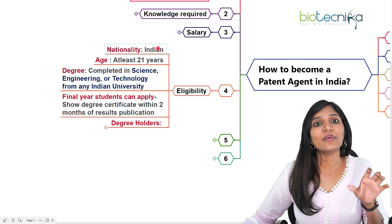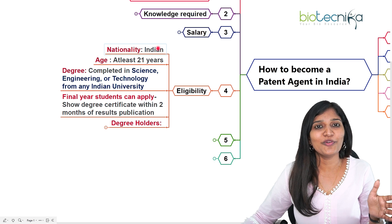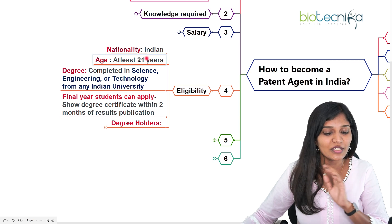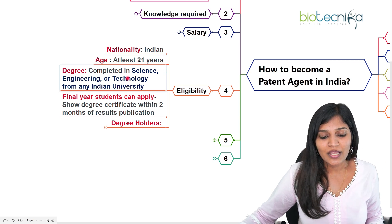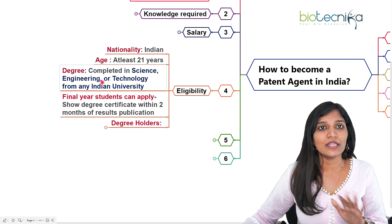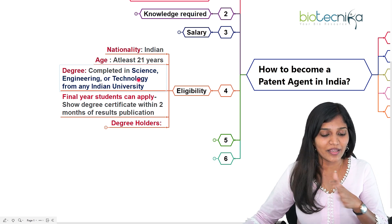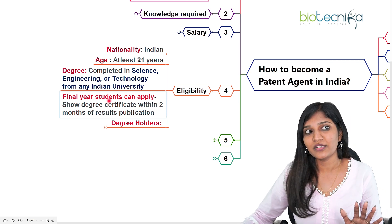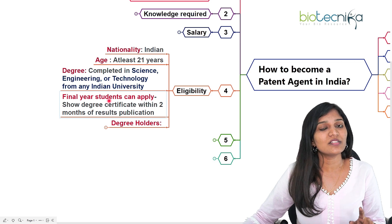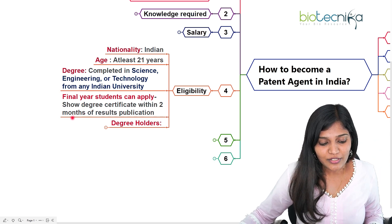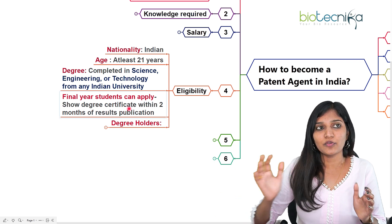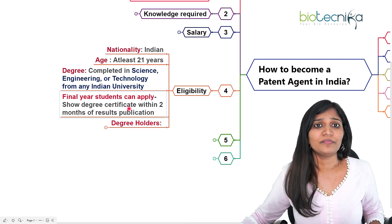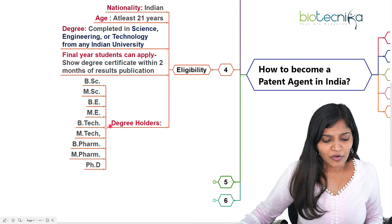The eligibility for the patent agent examination: first, you must be an Indian citizen, at least 21 years old — which is why you can start applying after completing your bachelor's. Freshers can apply; master's and PhD candidates can all apply. You should be from science, technology, or engineering from any Indian university — biotechnology, microbiology, or whatever your field. Final year bachelor's students can also apply, but you need to show your results within two months of their publication.